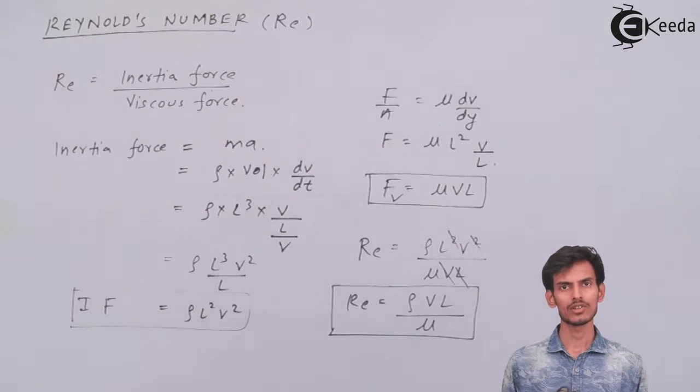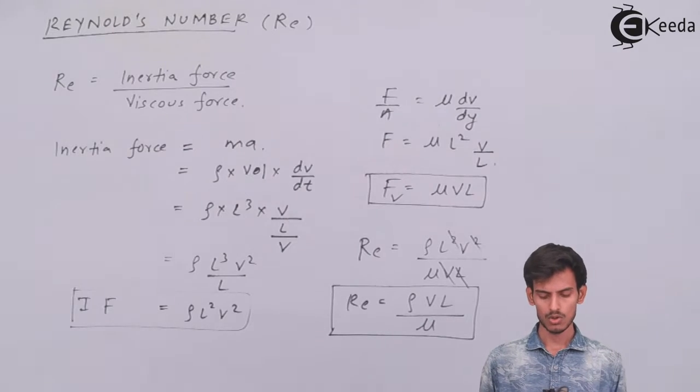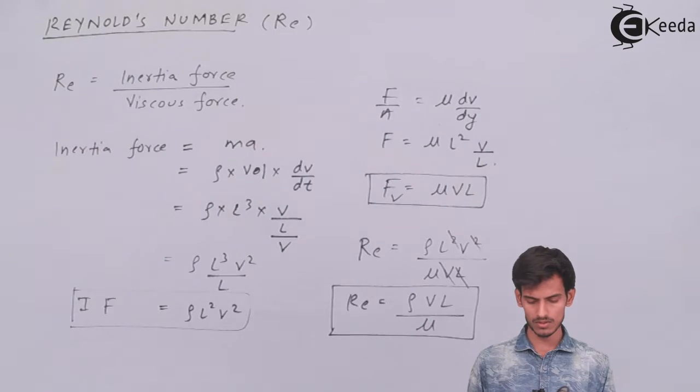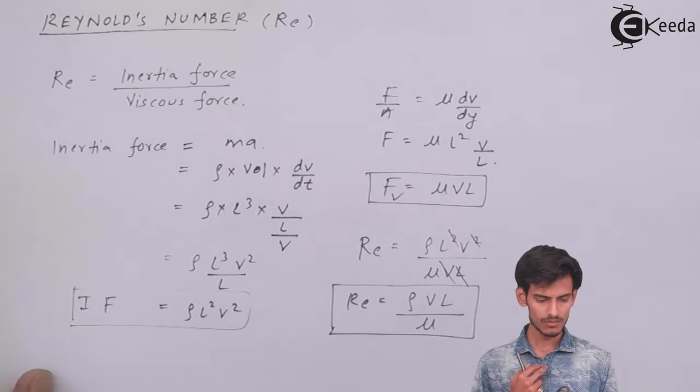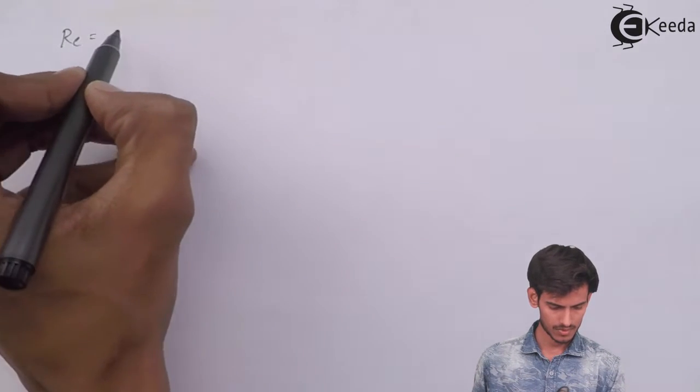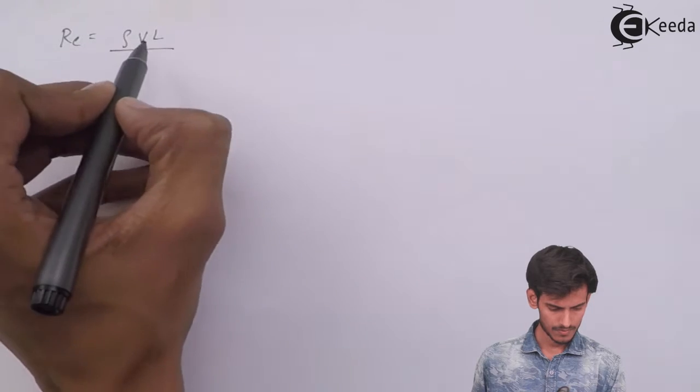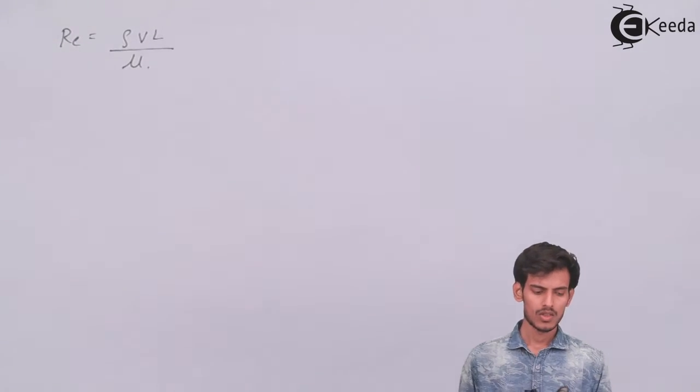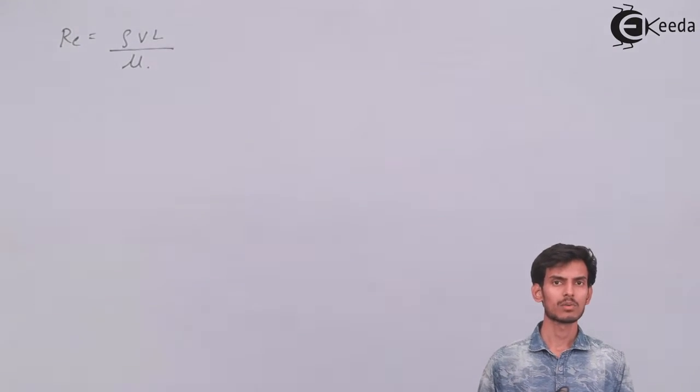So what we've got here is Reynolds number: ρvL/μ. There's one more way in which you can write this equation.